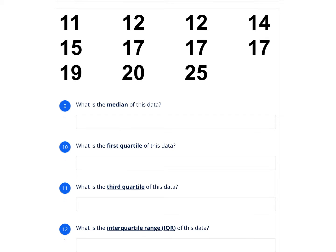When we get a list of data, the first thing you should always do is put that data in order first. So this one's actually in order.